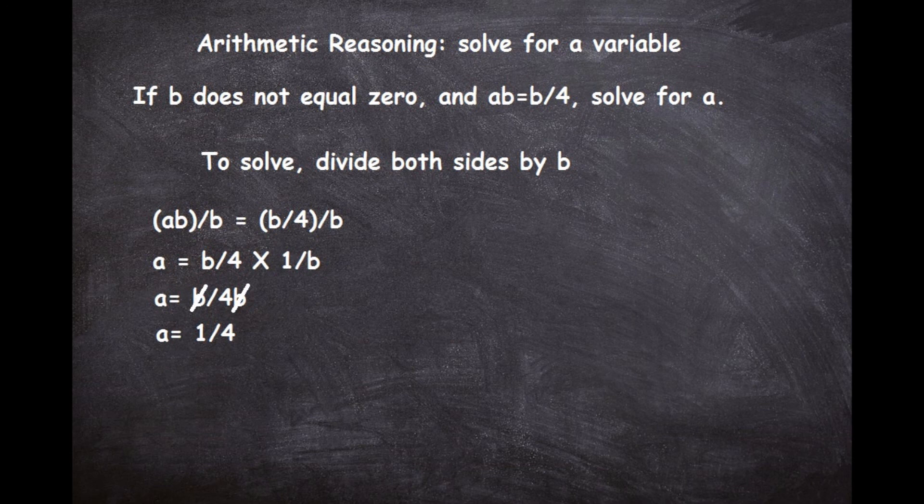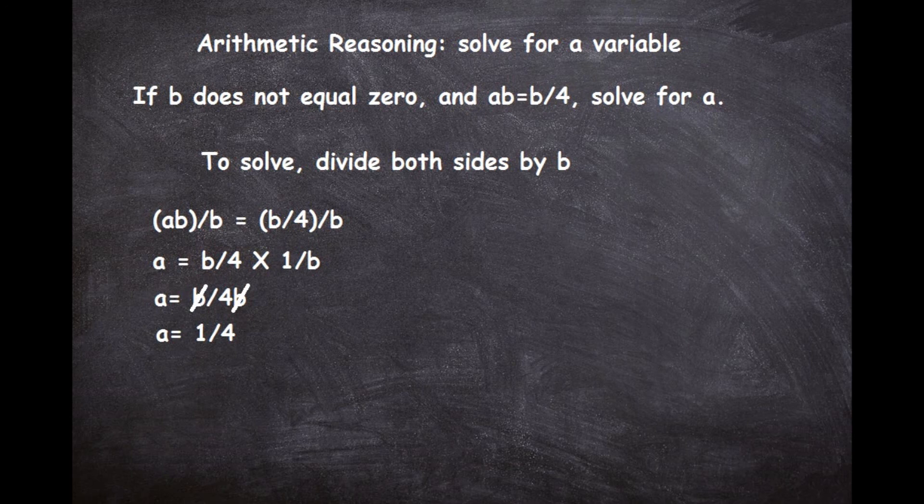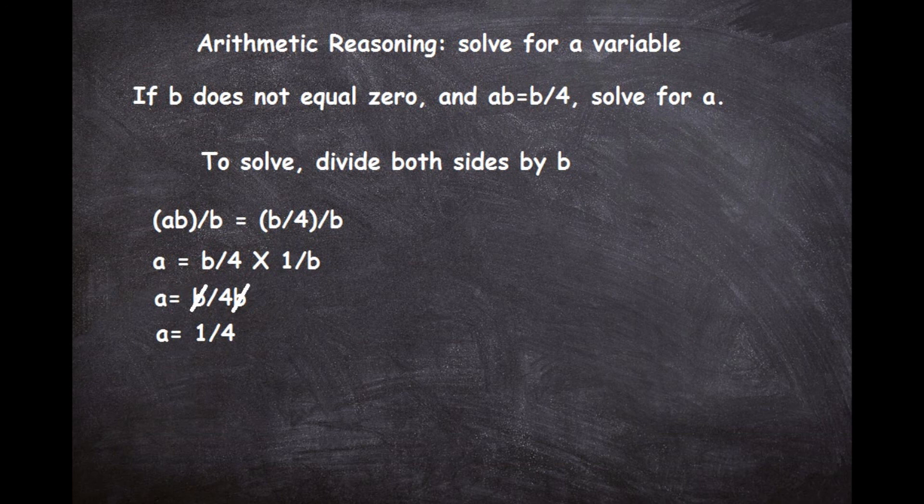And occasionally you can work backwards, because 1/4 is going to be one of your choices. So what you can do is you can substitute that 1/4 into the equation up top and try out the answer if you want to do it that way, if you're having problems figuring out how to simplify, say b/4 over b or something like that. So just remember there's always multiple angles you can tackle these type of questions.